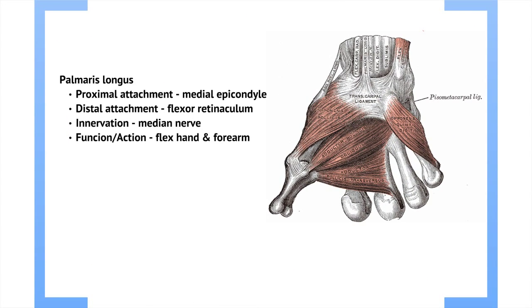Palmaris longus is a muscle that originates at the medial epicondyle and inserts into the flexor retinaculum, which is a thickened portion of fascia. It also inserts into the palmar aponeurosis, which is a thickened portion of the palmar fascia. Again it's innervated by the median nerve, and its function is to flex the hand and the forearm.